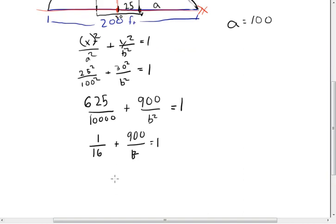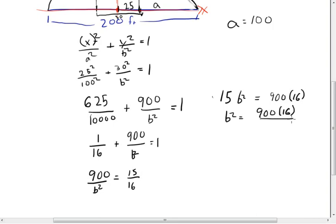So, I'm just going to go down the page here. 900 over b squared, we're going to subtract out this 1/16th, is equal to 15/16ths. We can cross multiply, which, I'm going to come over here now, 15 times b squared is equal to 900 times 16. And, of course, we can divide over the 15. So, b squared is equal to 900 times 16 over 15.